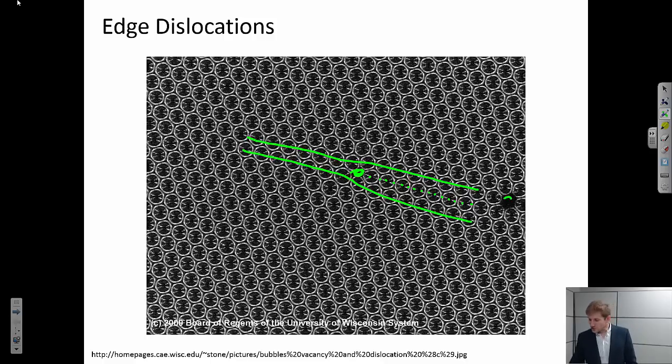As a side note, if we look closely we see another kind of defect, and that's a point defect called a vacancy.